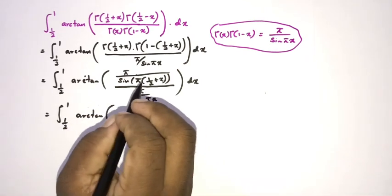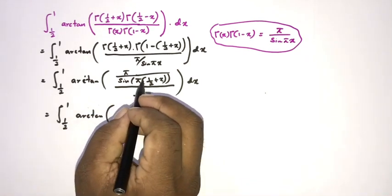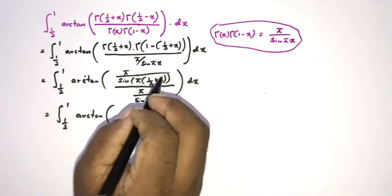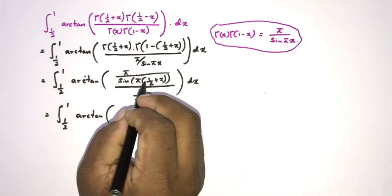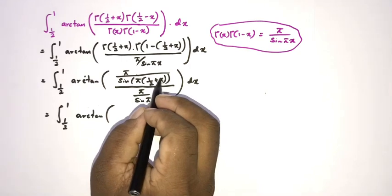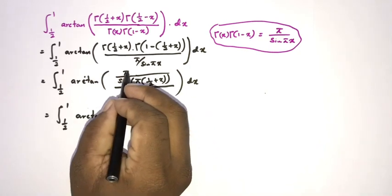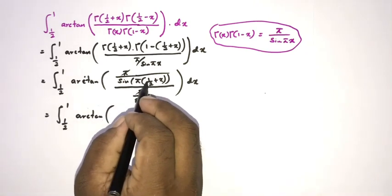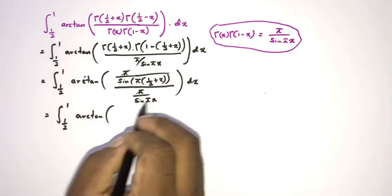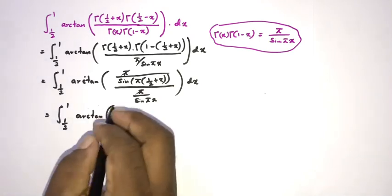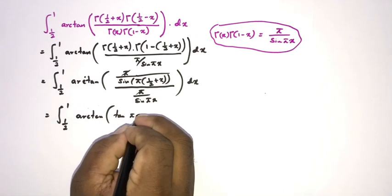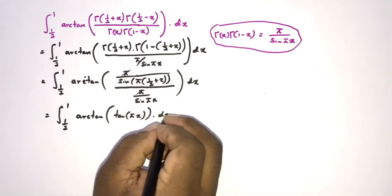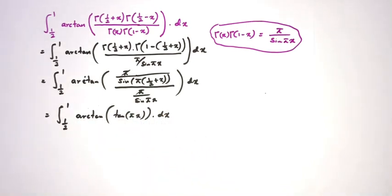We know that sin(π/2 + πx) = cos(πx). The π's cancel, giving us arctan of [sin(πx) / cos(πx)], which is arctan(tan(πx)). So we have the integral from 1/2 to 1 of arctan(tan(πx)) dx.